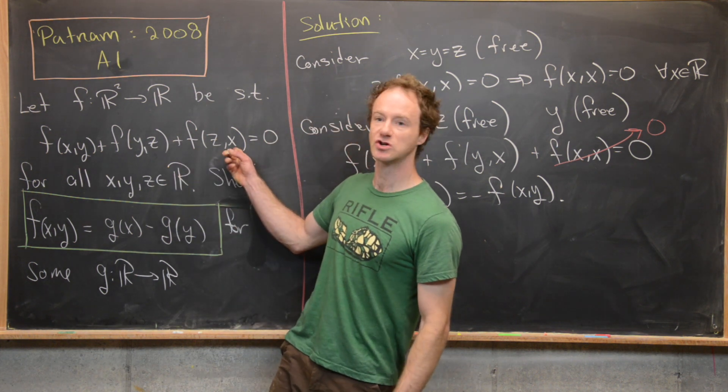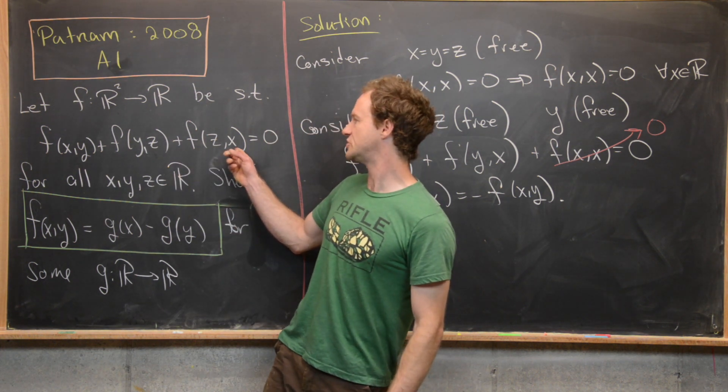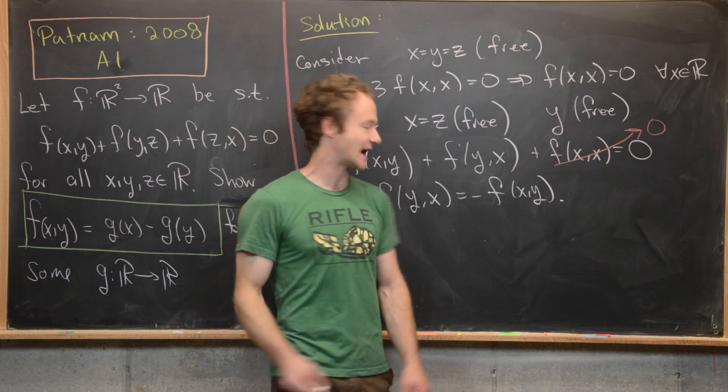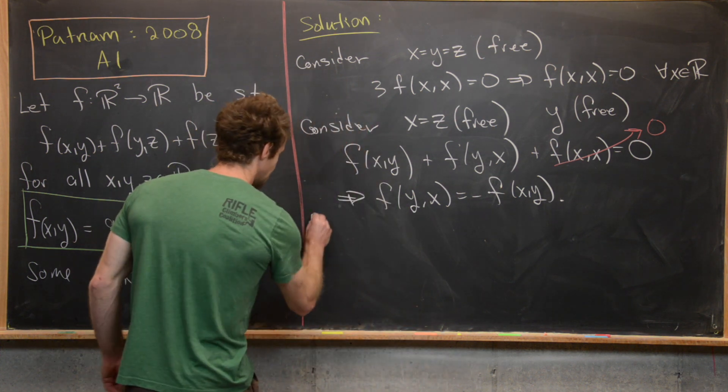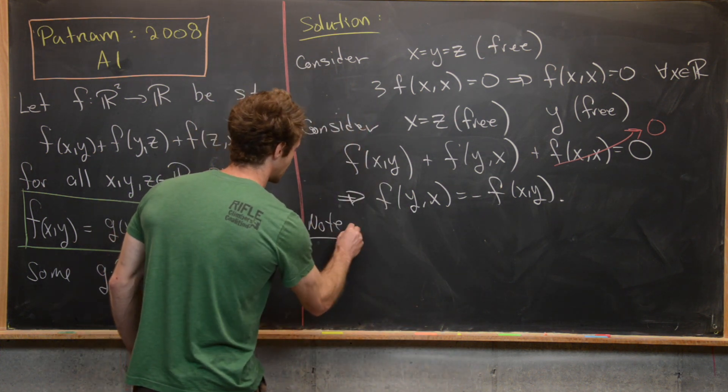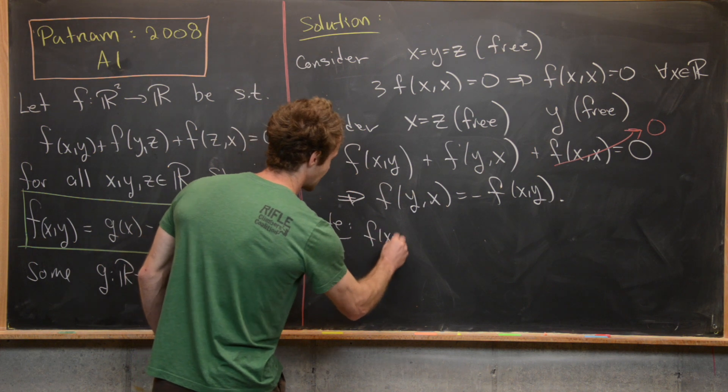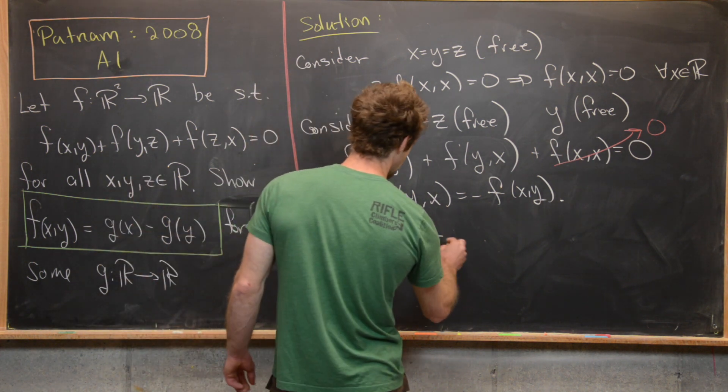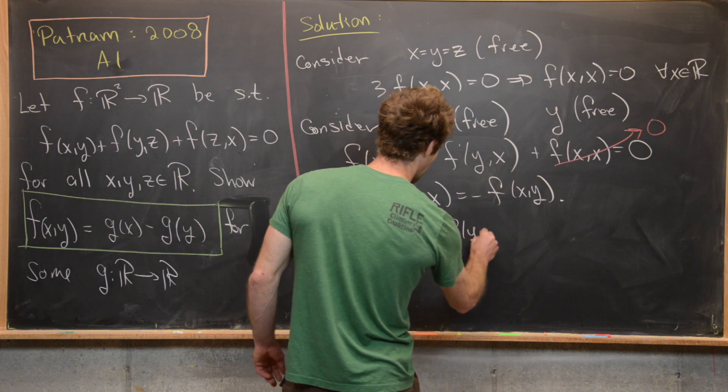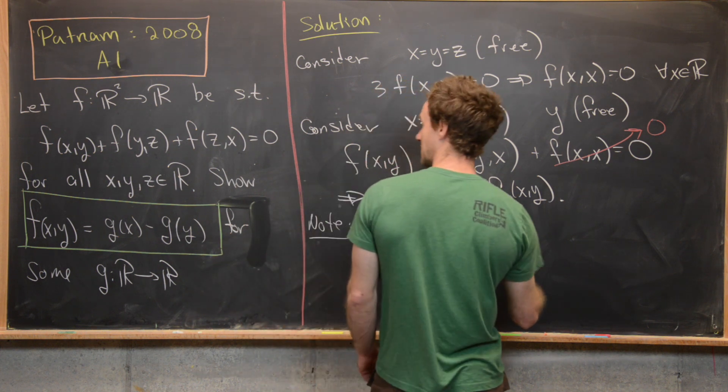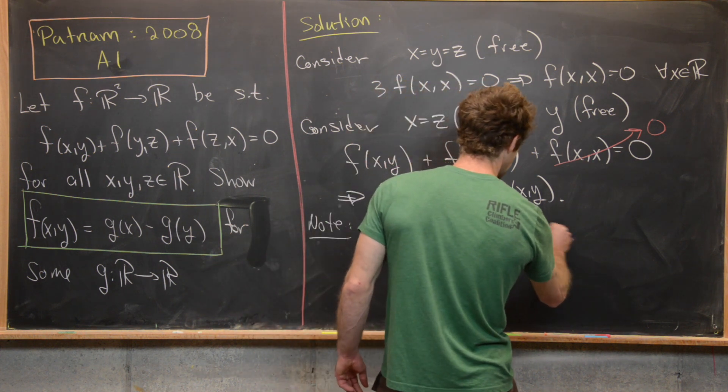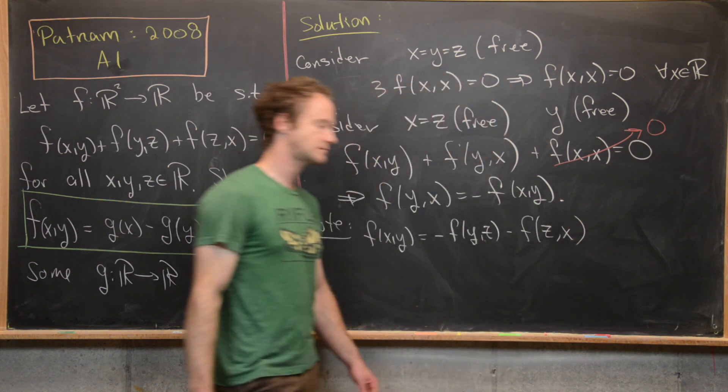So let's go ahead and take this functional equation. And what I want to do is solve it for f(x,y). So let's say just notice that our functional equation will give us f(x,y) equals, so that's going to be negative f(y,z) minus f(z,x). Great.